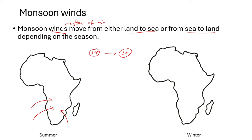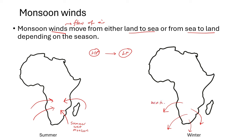During winter, the opposite happens — the wind flows from the land to the sea. We need to understand how winds end up moving from land to sea or from sea to land. The monsoon wind that moves from the sea to the land is known as a summer wet monsoon wind, and the one that moves from the land to the sea is known as a winter dry monsoon wind.